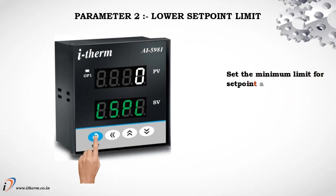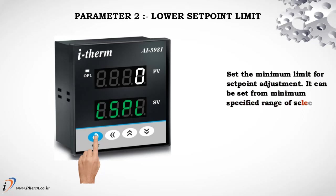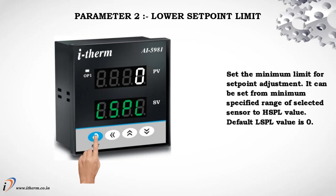Parameter 2: Lower Set Point Limit. Set the minimum limit for set point adjustment. It can be set from the minimum specified range of the selected sensor to the HSP value. Default LSP value is 0.